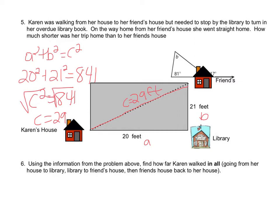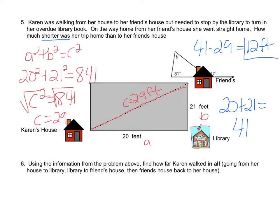We need to know how much shorter her trip home was than her trip to her friend's house. Going straight home was 29 feet, but going all the way around was 20 plus 21, which equals 41. So 41 minus 29 equals 12 feet shorter. Make sure you read the entire question — we weren't just looking for the hypotenuse.